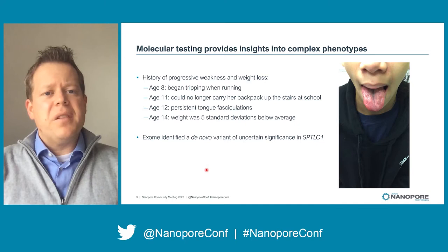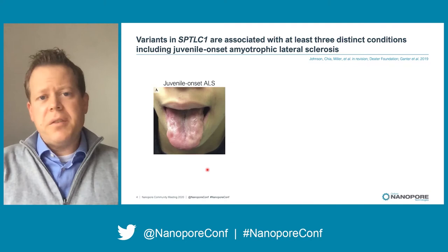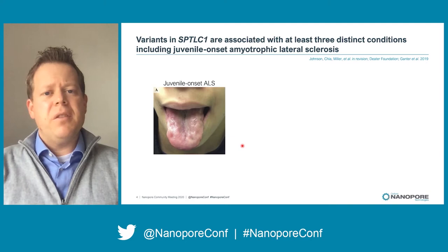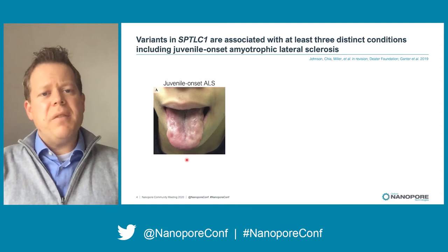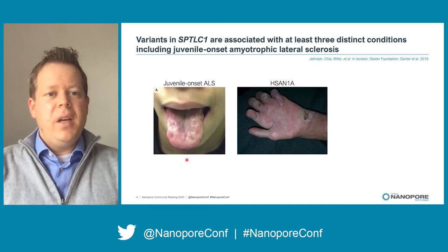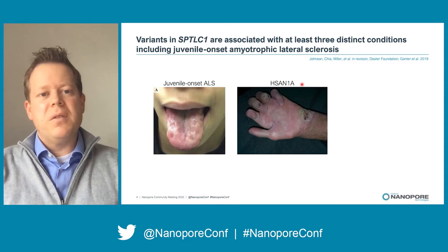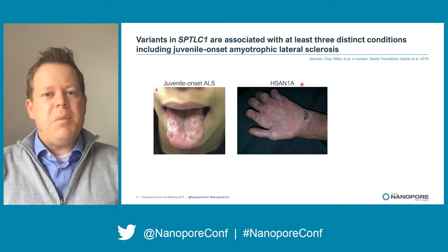SPTLC1 is a serine palmitoyltransferase and the question was what do we do next. Based on her history and her exam we suspected she had juvenile onset ALS, and we were actually able to identify two other patients with variants in this gene who also had a diagnosis of juvenile onset ALS. Now what's notable is that variants in this gene are classically associated with a sensory neuropathy called HSAN1A, in patients who lose sensation in their hands and feet at a fairly young age, leading to painless wounds and ulcers — kind of like diabetic neuropathy.